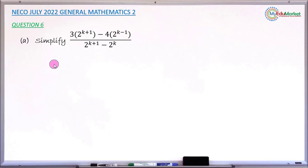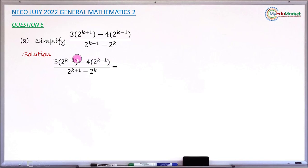Let's attempt to answer this question together. First you copy the given fraction. As this fraction involves indexed numbers, you apply the law of indices. Looking at the numerator, the indexed number inside the bracket is 2 raised to the power of k plus 1. When we add the powers, it means we are multiplying two indexed numbers having the same base. That is the rule we are going to apply.